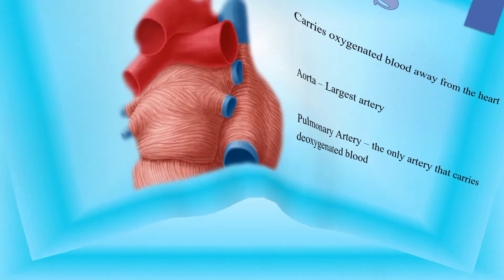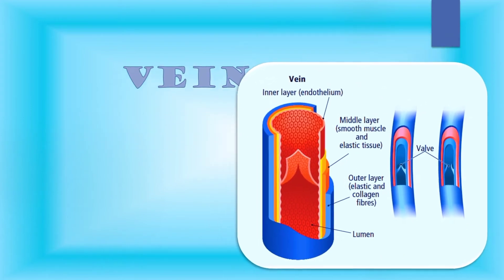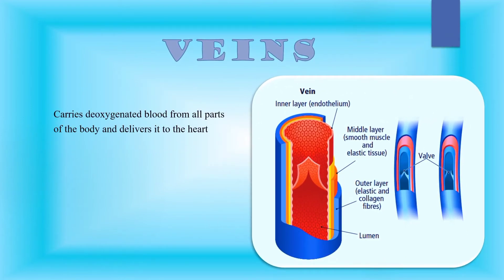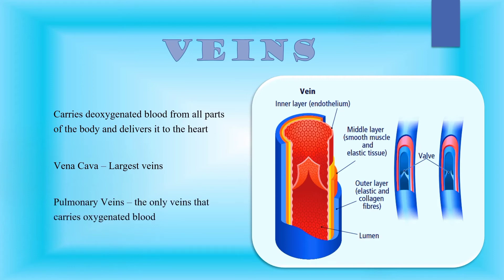Now let us discuss veins. Veins are blood vessels that carry deoxygenated blood from all parts of the body and deliver it to the heart. The largest vein is called the vena cava, and the only vein that carries oxygenated blood is the pulmonary vein.